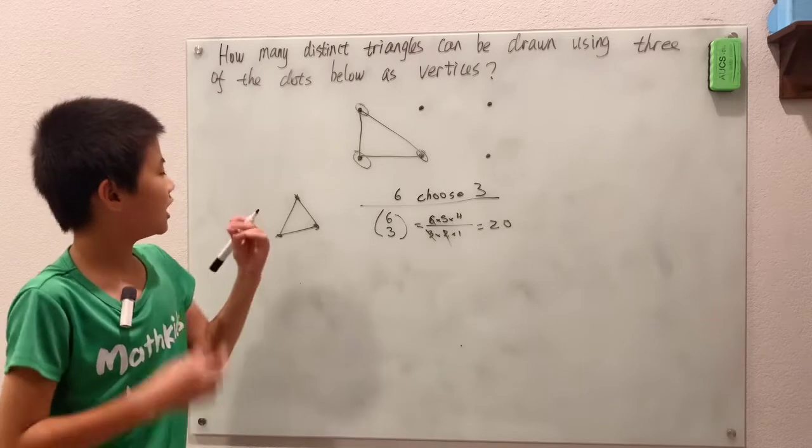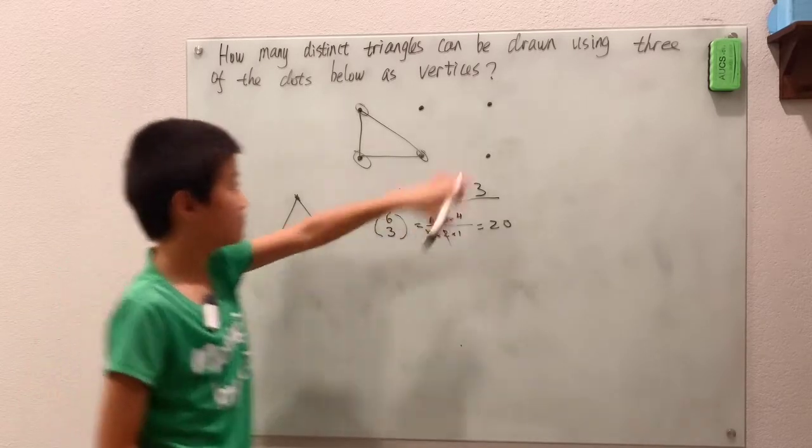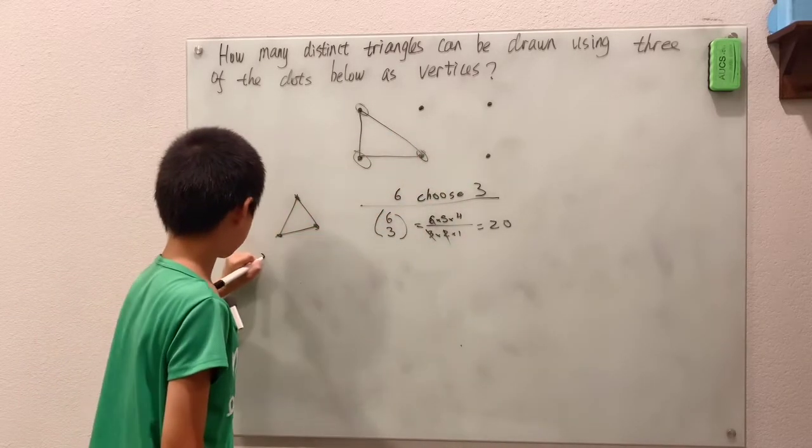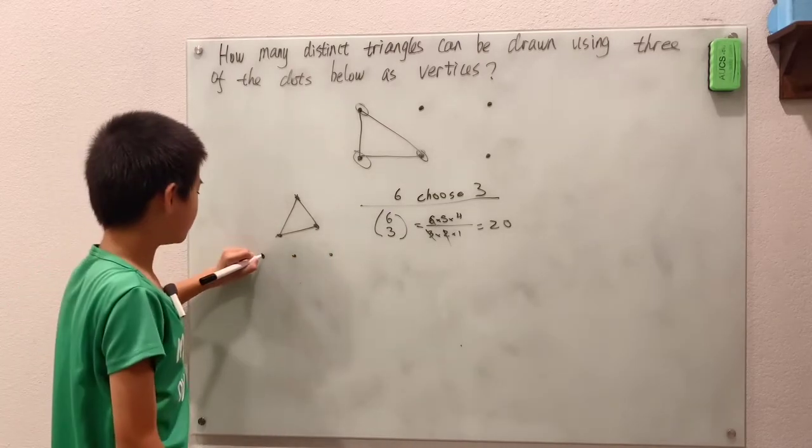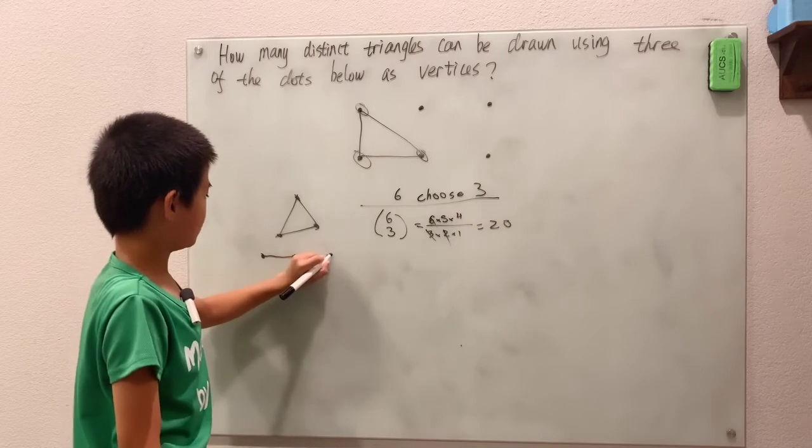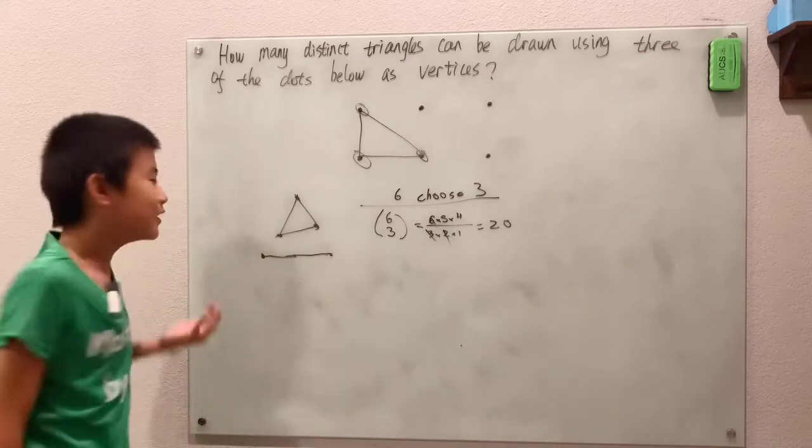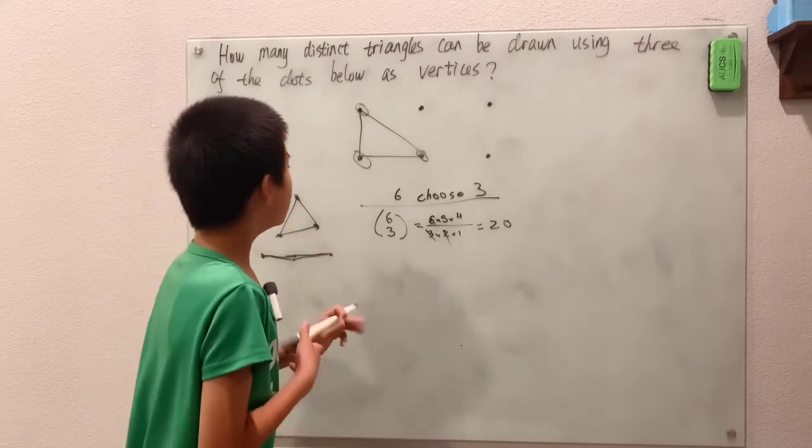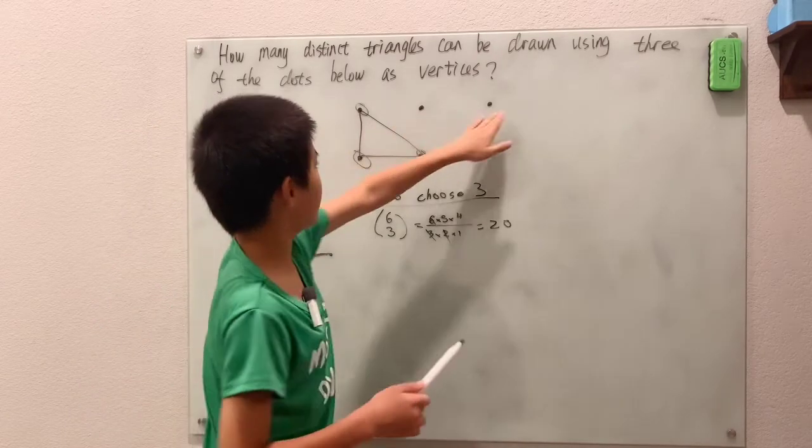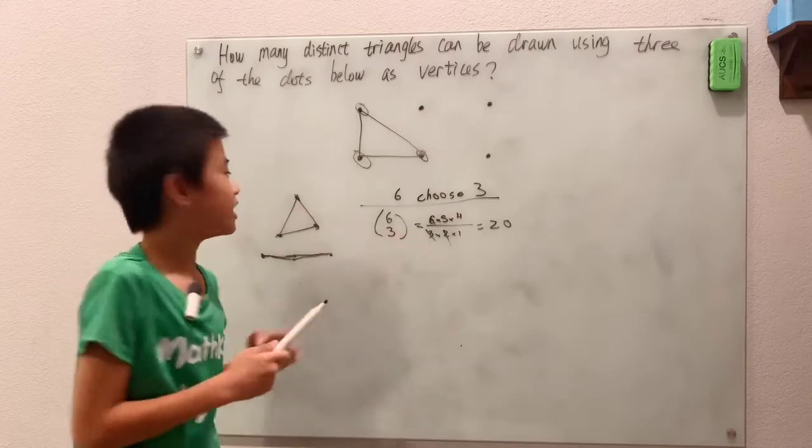Now that 'not on the same line' rule I just talked about - these three dots can't make a triangle. You can't construct a triangle like that. Unless this dot was a little in here, then you could make a tiny triangle. But these dots are on the exact same line.